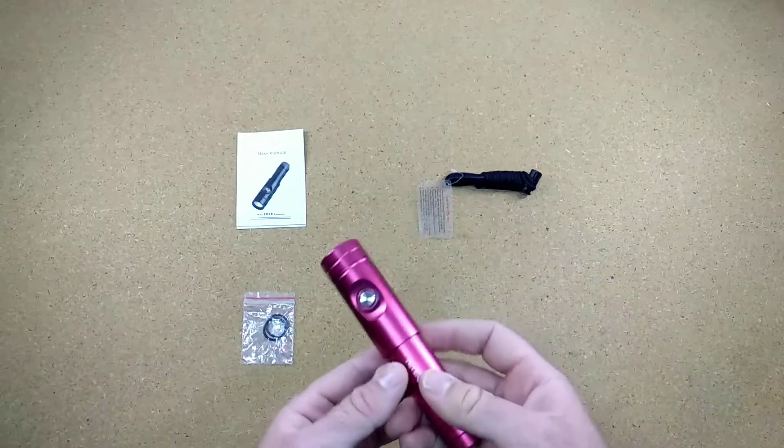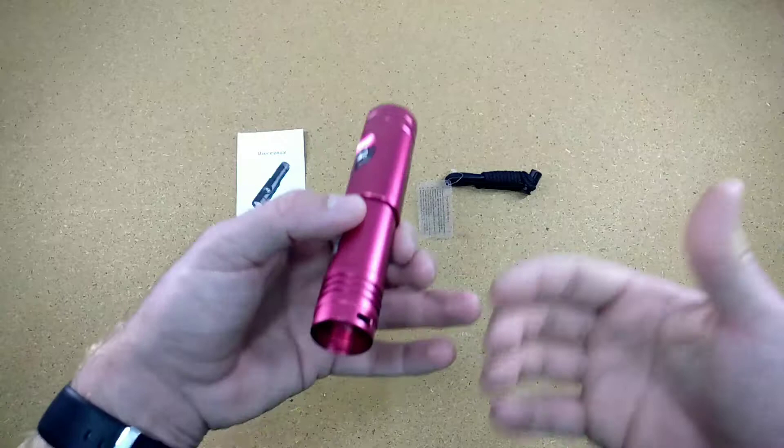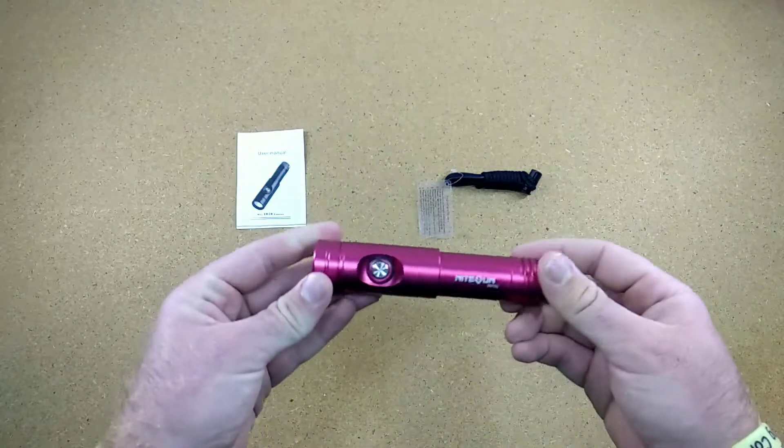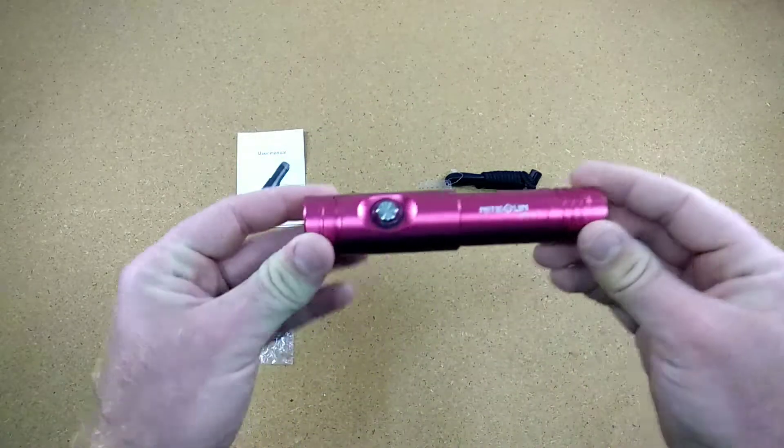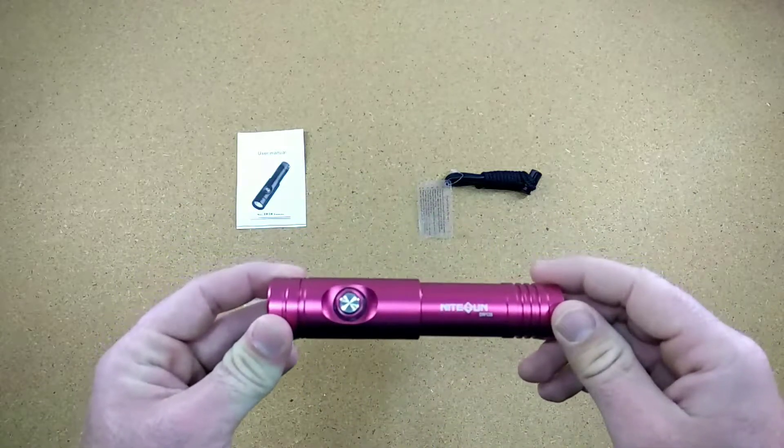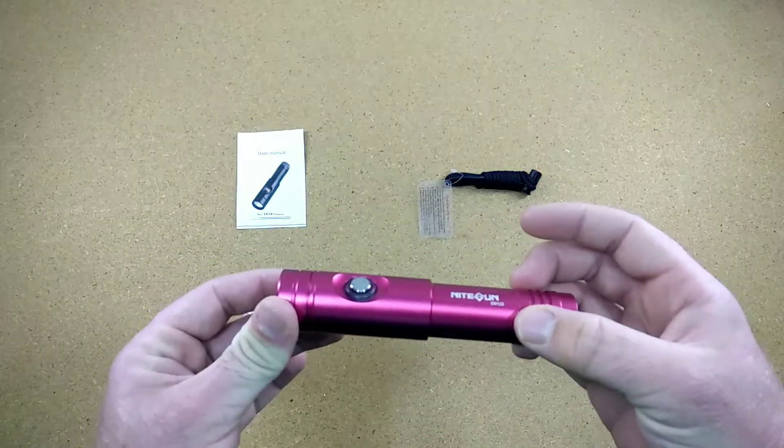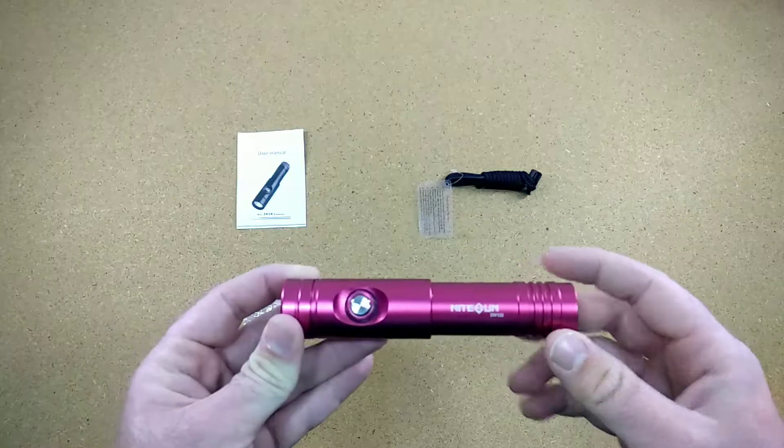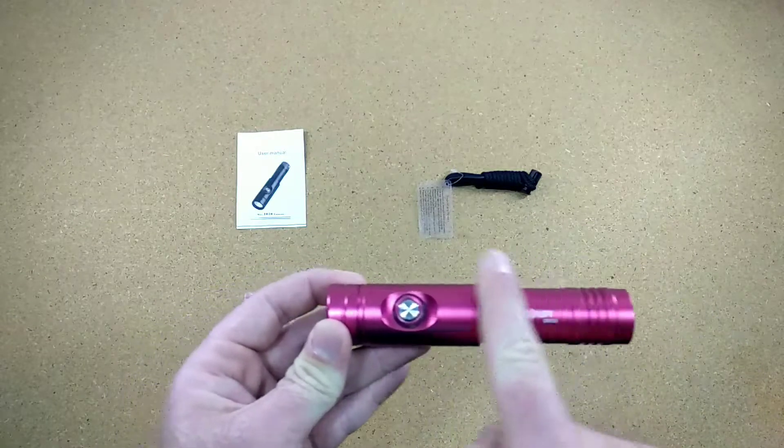Of course you can get it with a battery, with a charger, or even with a second extra battery, but this depends on the pack you are getting. Now here I got the nice red model. I like the color because it's quite distinctive. Not many lights have this kind of color.